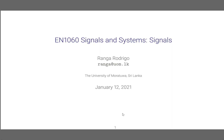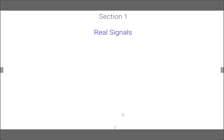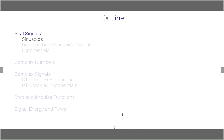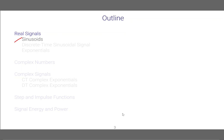Welcome everyone. In signals and systems we will study signals in this lesson. In particular we will study real signals and later on we will study complex signals. Under real signals we will study sinusoids, discrete time sinusoidal signals and exponential signals. Later, after a brief study about complex numbers, we will study continuous time complex exponents, then discrete time complex exponents, step and impulse functions, and then signal energy and power.